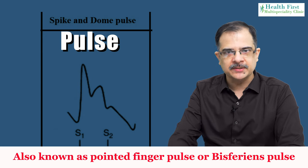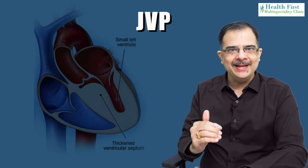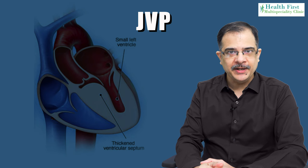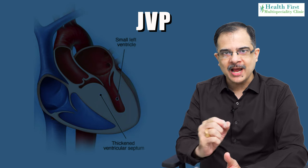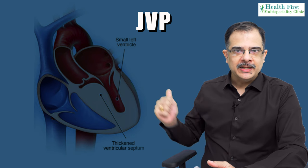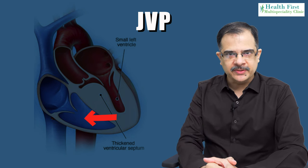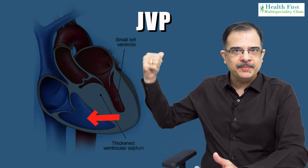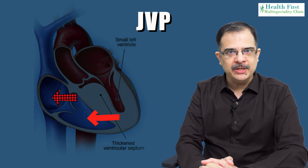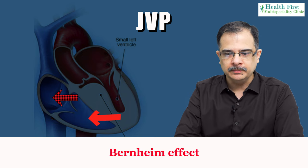When we look at the JVP, we know that JVP is due to right atrial pressures. In HOCM the left side is mainly affected, but we will still see signs of right-sided high pressure. This occurs because the hypertrophic septum compresses the right ventricle, increasing right ventricular pressure, which raises right atrial pressure and increases JVP. This is a very important sign known as the Bernheim effect, and it is an important MCQ point.